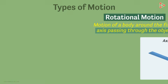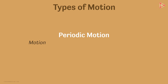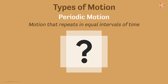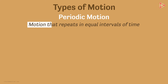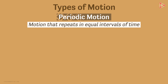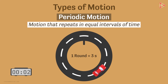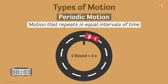The final type of motion is periodic motion, which is the motion that repeats itself in equal intervals of time. Can you think of any example? Assume an object is moving in circles and covering each round every three seconds — is it performing periodic motion? Absolutely! Since it is repeating its motion along the same path every three seconds, it is undergoing periodic motion.